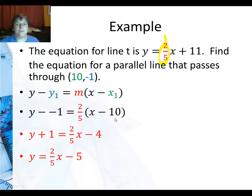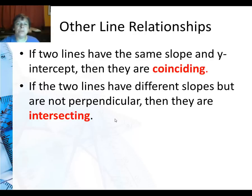Now, for other types of line relationships, if two lines have the same slope and y-intercept, then they are called coinciding. If two lines have different slopes but are not perpendicular, then they are intersecting. And maybe I should say intersecting, not perpendicular, because technically perpendicular lines intersect.